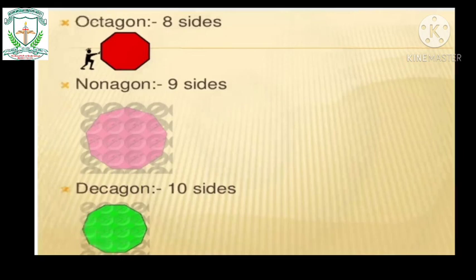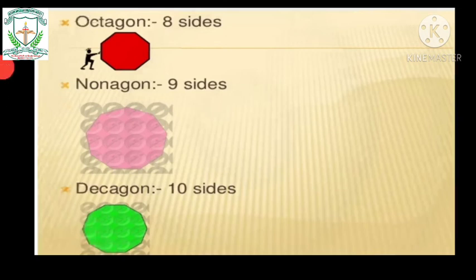In today's class, we learnt what curves are and the types of curves — closed curves and open curves. Then we understood the definition of polygons, which are polygons and which are not. Then we understood the classification of polygons based on the number of sides. Thank you, dear children.